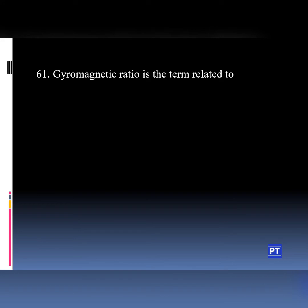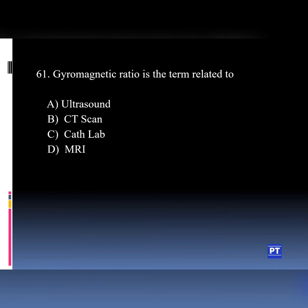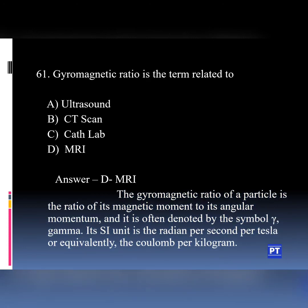Question number 61: Gyromagnetic ratio is the term related to which modality? Option A Ultrasound, Option B CT scan, Option C Cath lab, Option D MRI. The answer is Option D, MRI. The gyromagnetic ratio of a particle is the ratio of the magnetic moment to its angular momentum. It is denoted by the symbol gamma and its SI unit is radians per second per Tesla. Tesla is the unit of magnetic field strength. Knowing the gyromagnetic ratio and the magnetic field strength makes it easy to calculate the Larmor frequency.